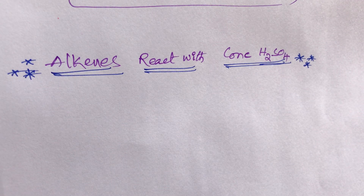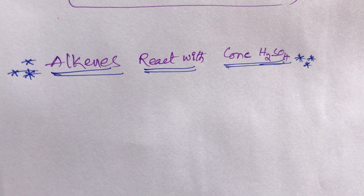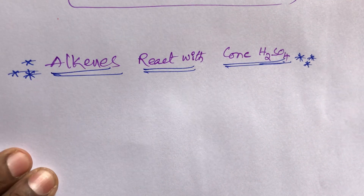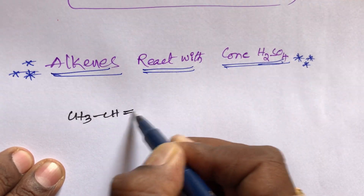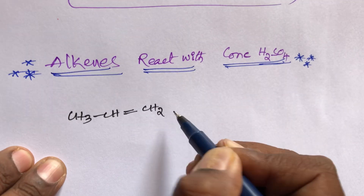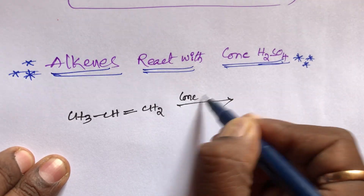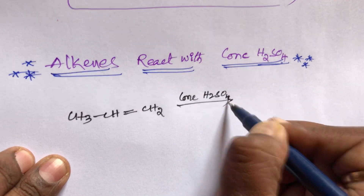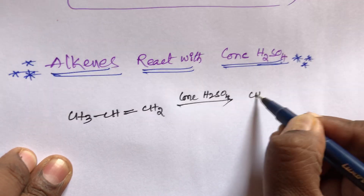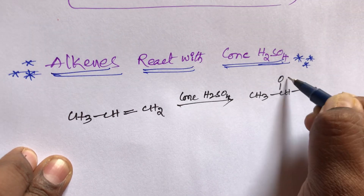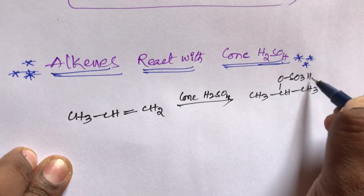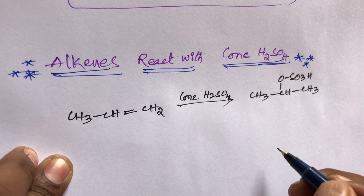The next topic is alkenes reacting with concentrated H₂SO₄ — a very important topic. Taking propene (CH₃–CH=CH₂) as an example, in the presence of concentrated H₂SO₄, the direct product formed is CH₃–CH(OSO₃H)–CH₃, which is a bisulfate salt.